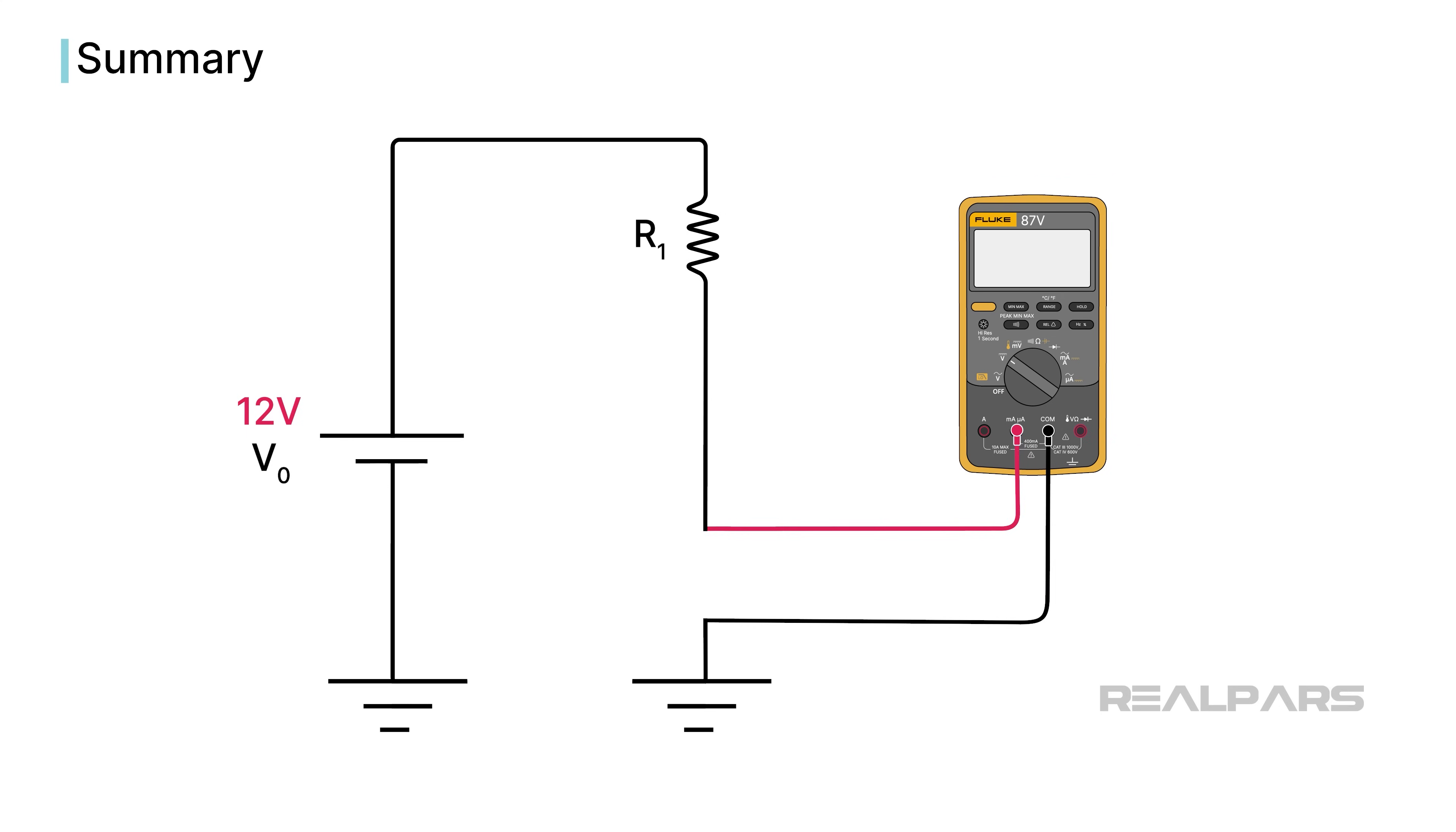Amperage is measured by placing the DMM in series with the circuit. Blown fuses due to incorrect parallel connections often result.